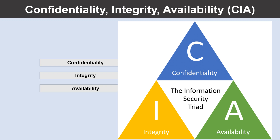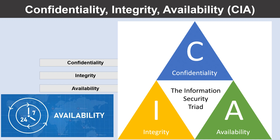And let's look at Availability. Availability refers to making data available to those who need it. It's important to the organization to keep customer data secure, but at the same time it must also be available to employees who deal with customers. While it might be more secure to store the data in an encrypted format, employees need access to decrypted data as well.